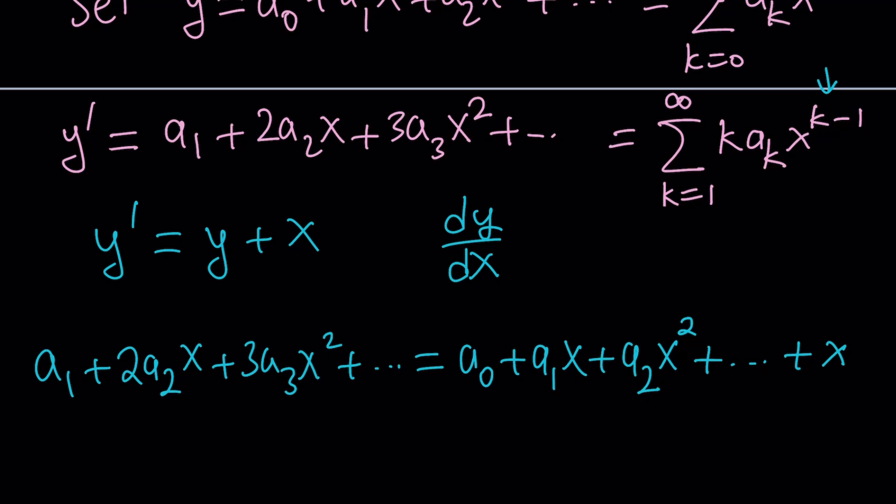Now we put everything on the same side and set the whole thing equal to 0. For an infinite polynomial to equal 0 for all x values, all the coefficients must be 0 — with one exception you'll see in a moment.